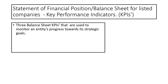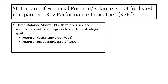The three balance sheet KPIs that are used to monitor an entity's progress towards the strategic goals are the return on capital employed, ROCE, the return on net operating assets, and finally the net debt to EBITDA ratio.